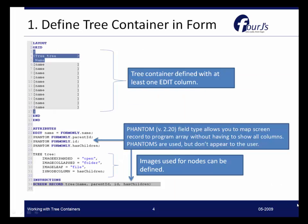The first step is to define the tree container in the form. Here we can see that simple form that has a tree container defined. Notice that it has only one column. That one column has to be an edit column and it's simply going to display the text and information about that particular node in the tree.